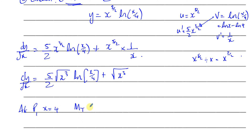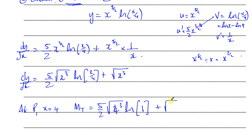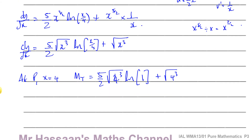At P, x equals four. Substituting: we have five over two times root(64) times ln(4/4) plus root(64). Now ln(1) equals zero, so the first term vanishes. We're left with root(4³) = root(64) = 8. So the gradient of the tangent at P is 8. Therefore the gradient of the normal is minus one over eight, the negative reciprocal.